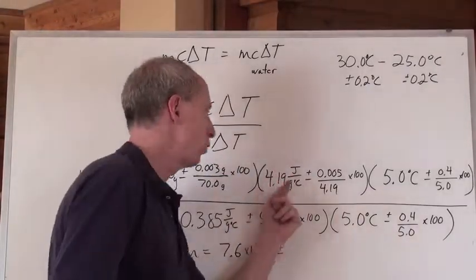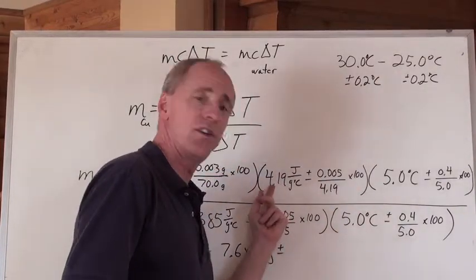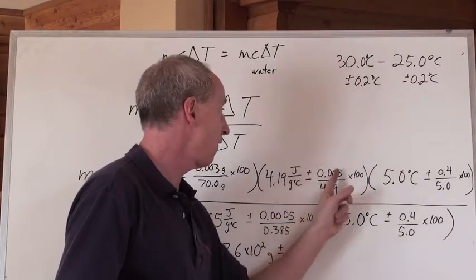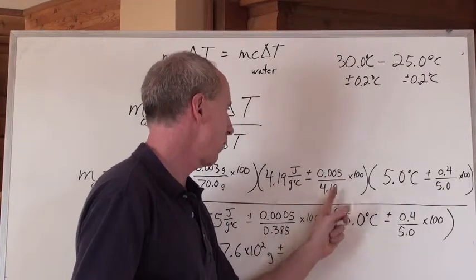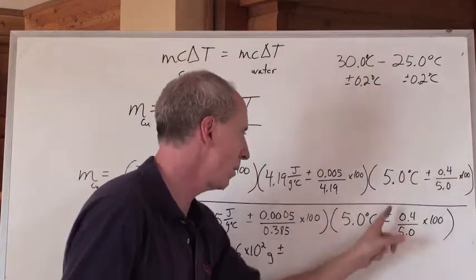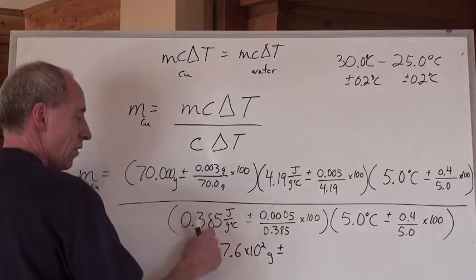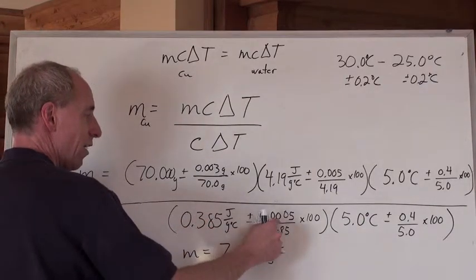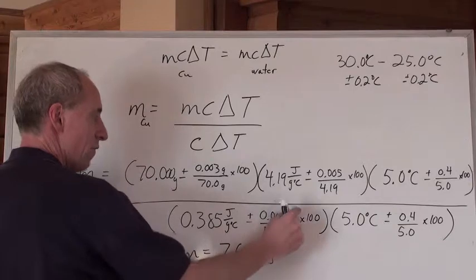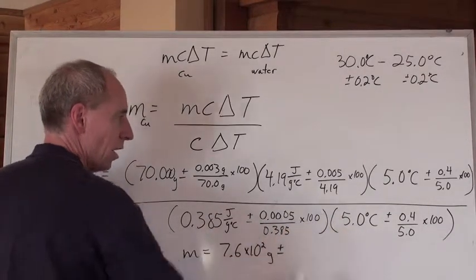Here's 4.19 joules per gram degrees Celsius. If you're not given the uncertainty value for that, go 0.00 and then a 5 after it, divided by 4.19 times 100 is the percent for that. The percent for those temperature changes there, and then the 0.385 for the copper as a heat capacity, there is 0.0005 and then divided by 0.385 times 100.